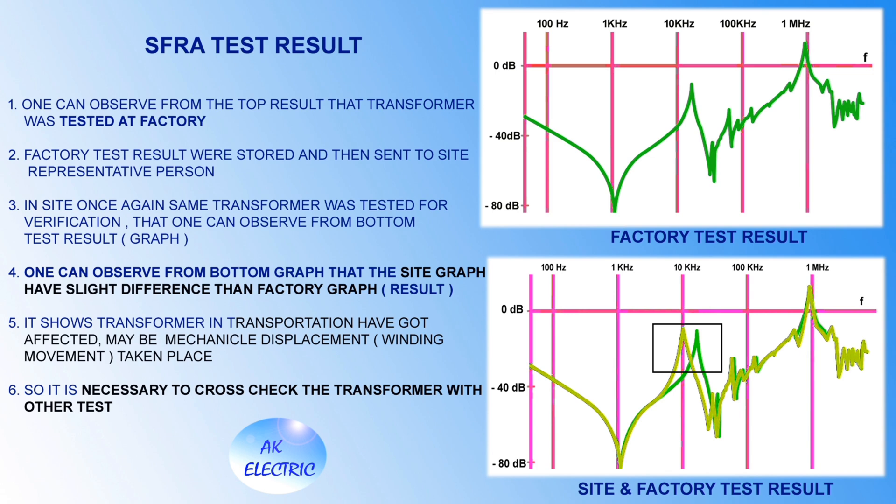For SFRA test results: the transformer is first tested at the factory, and factory test results are stored and sent to the site representative. At site, the same transformer is tested again for verification. One can observe that the site graph shows a slight difference from the factory graph at around 10 kHz, indicating the transformer was affected during transportation — possibly mechanical displacement or winding movement. It is therefore necessary to cross-check the transformer with other tests.